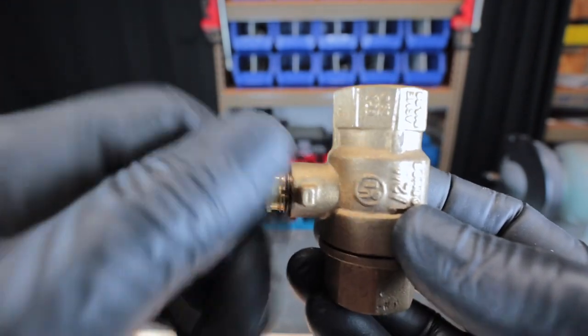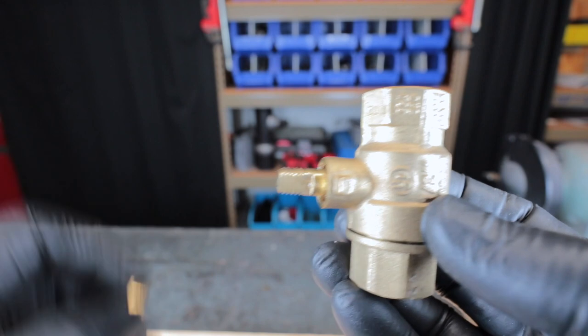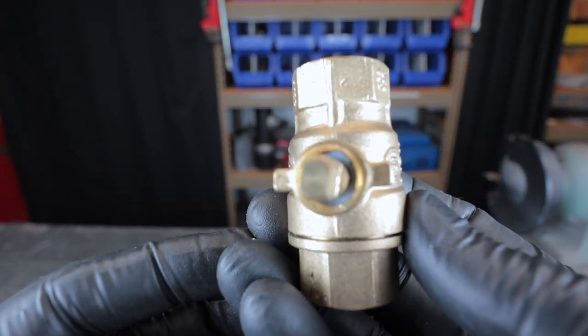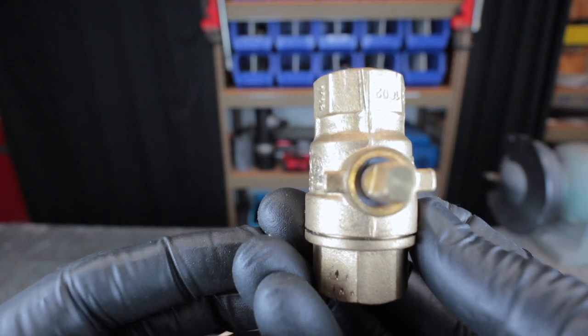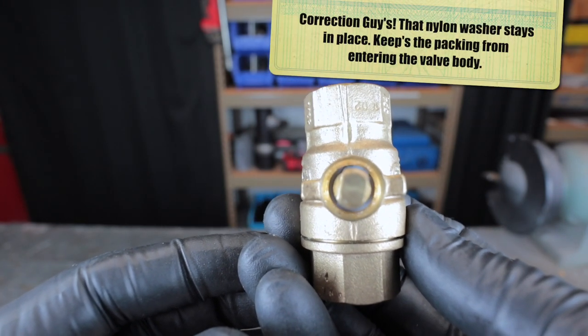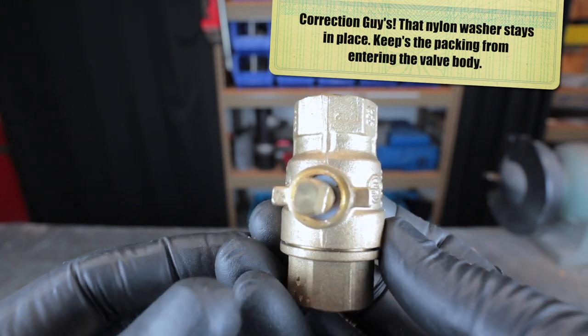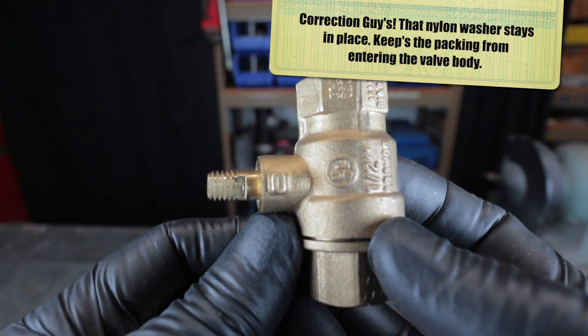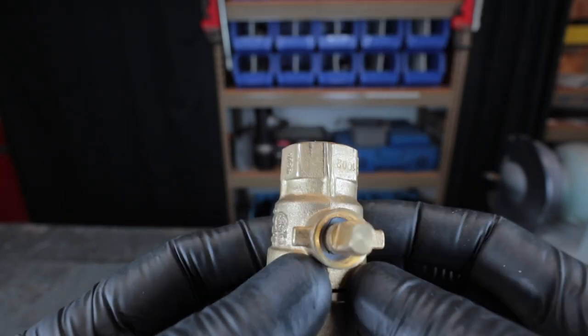I will take this little packing nut out and if you look inside there, I don't know if you can see it but there is a nylon washer in there. Generally I would remove the washer and put the packing first and then put the nylon washer back, but this is so far in that what I generally do is I just put the packing on top of the nylon washer.